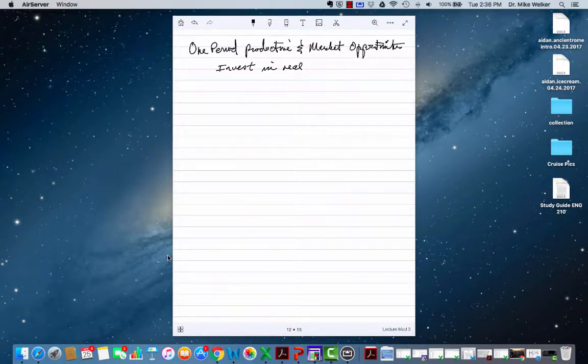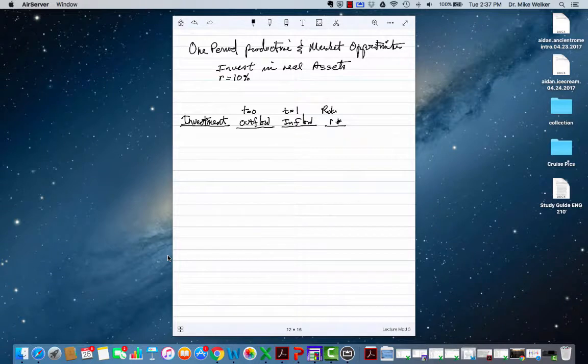Let's say the market rate of interest r is 10 percent. Let's make a chart that shows some possible investments. Time period t equals zero has this outflow, time period t1 has an inflow from our project. R star is our internal return on the project, and we look at the project net present value and the total NPV across multiple projects.